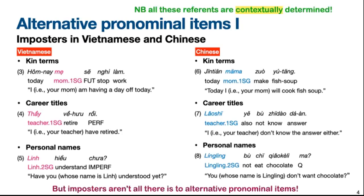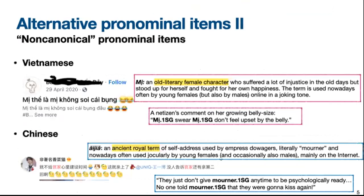Impostors like these are highly common in Vietnamese and Chinese, but they are still not all there is to pronominal items in human language. Apart from imposters, we also notice a second type of alternative pronominal item. We use the term non-canonical here because this type has not been properly studied or even documented before, although it is gaining popularity on the internet. In the Vietnamese example, the word mị is used to refer to the speaker — so instead of saying 'I swear I don't feel upset', this person says 'mị swear mị don't feel upset', which sounds very funny. Mị is originally the name of a character in an old literary work, but nowadays it has gained a new pronoun-like use on the internet. Similarly, in Chinese, there is an ancient royal term which literally means 'mourner' and was used by Empress Dowagers to refer to themselves.